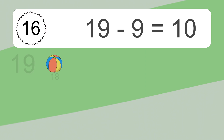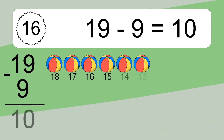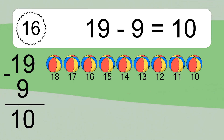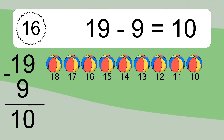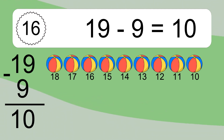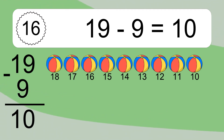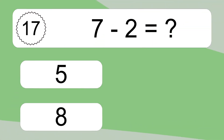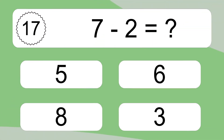19 minus 9 equals 10. Let's count it: 18, 17, 16, 15, 14, 13, 12, 11, 10. 7 minus 2 equals what?